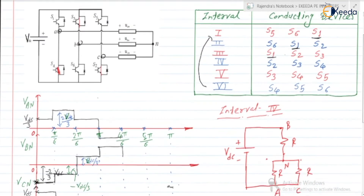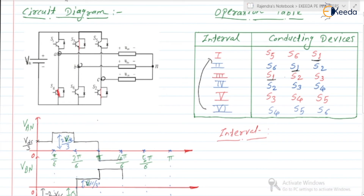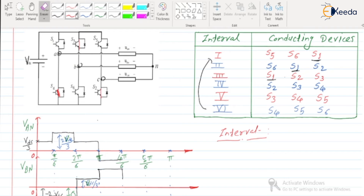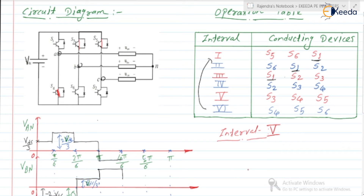Next, let us check for the 5th interval. During the 5th interval, switch numbers 3, 4, and 5 are in the ON state, and switch number 2 will be in the OFF state. During this interval, phase A is connected to the negative plate of the VDC, and phase B and phase C are connected to the positive plate of the VDC.